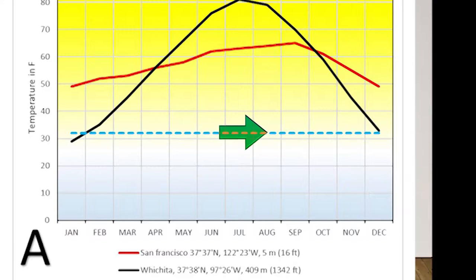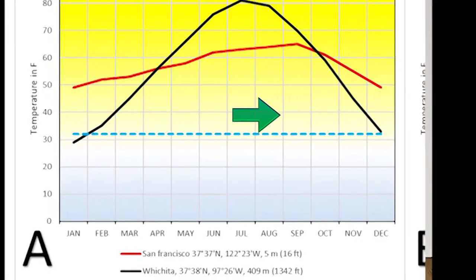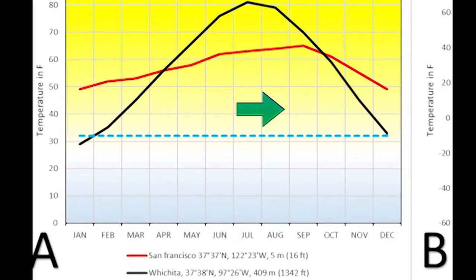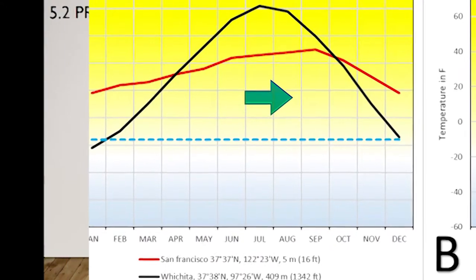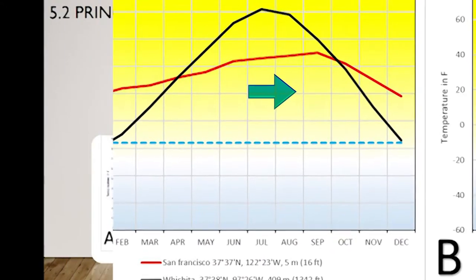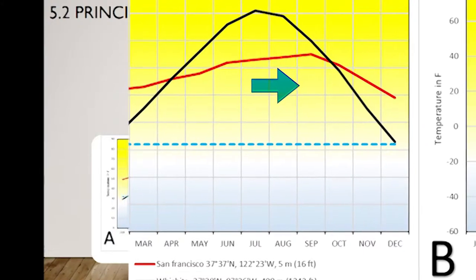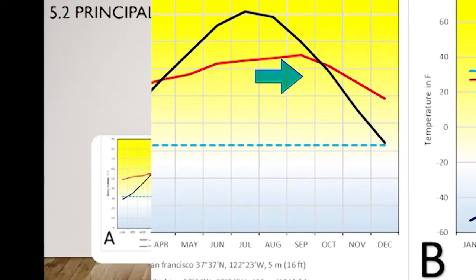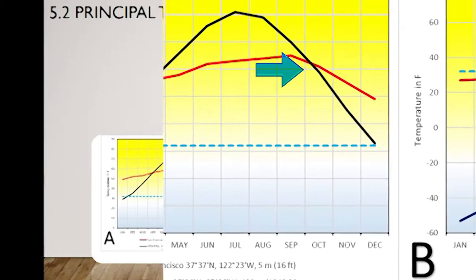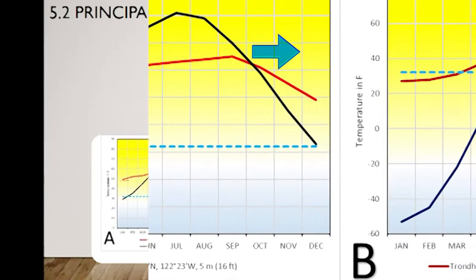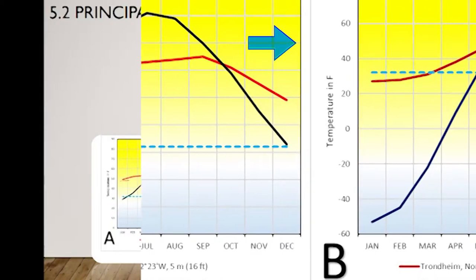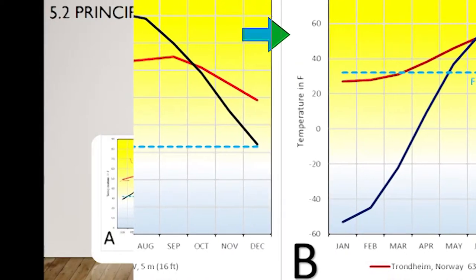Let's compare San Francisco and Wichita. If you compare latitude — 37.7 versus 37–38 — they're at very close latitudes, and altitude is not much different either. But Wichita is located in the center of the United States. For San Francisco, the temperature range is not so much — roughly between 50 to 65, about 15 degrees.